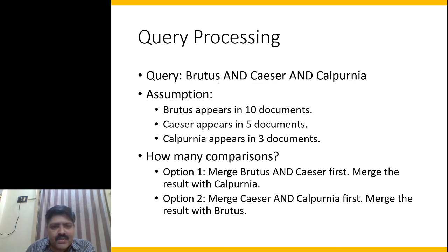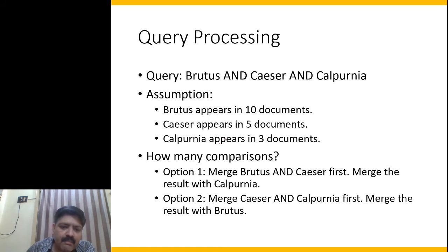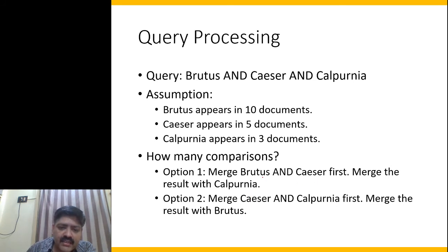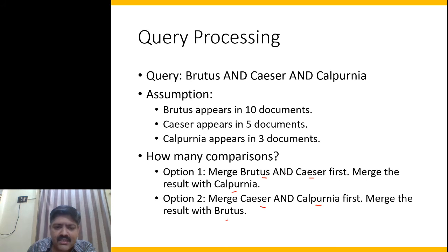Let's get more insight with a richer example. Say we have a query 'brutus AND caesar AND calpurnia', where brutus appears in 10 documents, caesar in 5 documents, and calpurnia in 3 documents. Can you work out the comparisons for two different merge orders? Option 1: merge brutus with caesar first, then merge the result with calpurnia. Option 2: merge caesar and calpurnia first, then merge the result with brutus. Please pause the video and work it out.